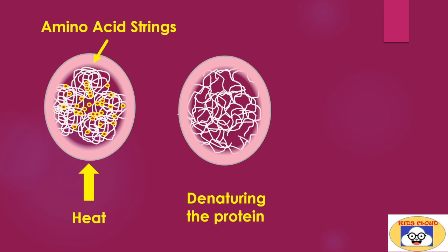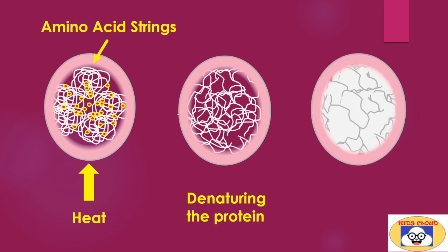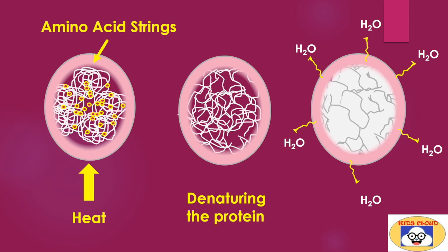As you supply more and more heat to the egg, or boil it for a longer time, the unfolded proteins gain more and more energy. This makes the proteins bind with other proteins, leading to the formation of stronger covalent bonds than before. During this process, the water surrounding the protein molecules is expelled out, and the egg becomes harder.